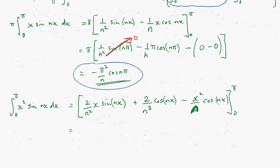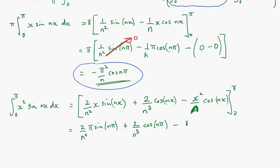Putting in x = π: (2/n²)·π·sin(nπ) — which I know goes to zero — plus (2/n³)·cos(nπ) minus (π²/n)·cos(nπ). Then putting in x = 0: the first term gives zero (since x = 0), the cosine term gives cos(0) = 1 so I get +2/n³, and the last term x² = 0 gives zero.